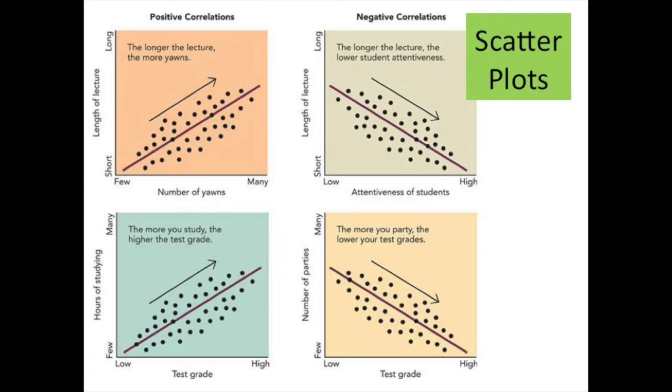So let's take a look at four scatter plots, which is one of the most common ways to represent correlation. In this first one that we see in the top left-hand corner of the screen, there is a correlation between the length of lecture and the number of yawns, and this is a positive relationship. The reason you can tell that it is a positive relationship is that when the length of the lecture increases, the number of yawns will also be increasing and moving in the same direction.